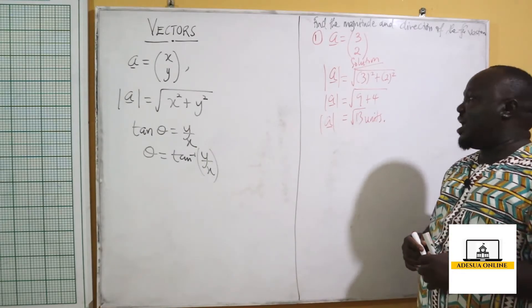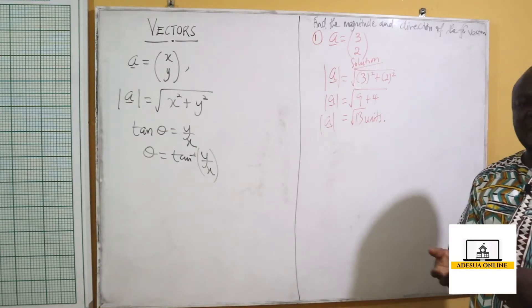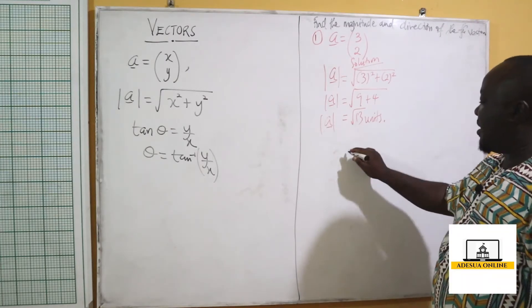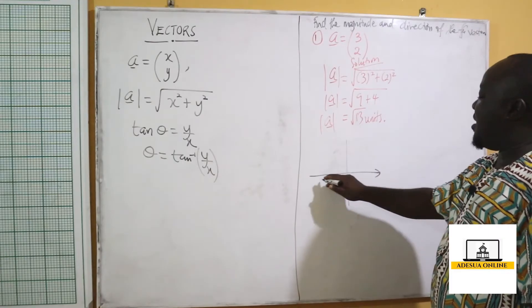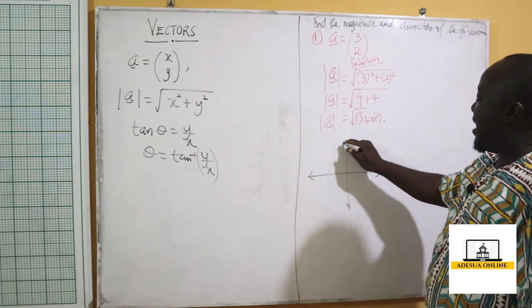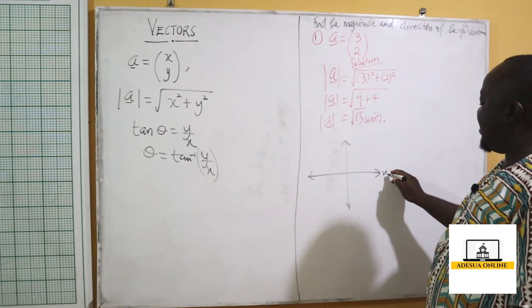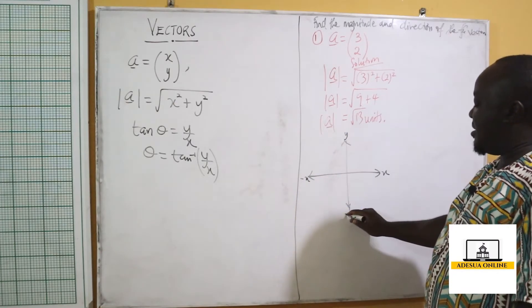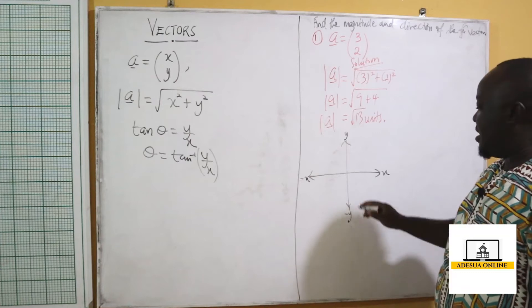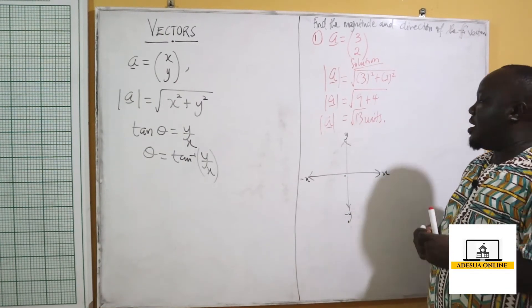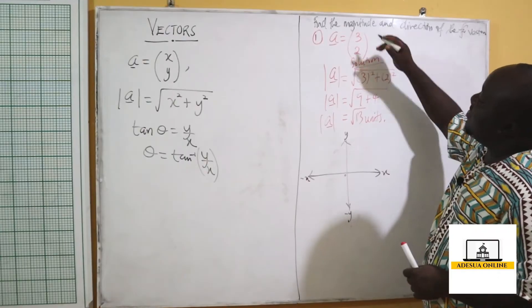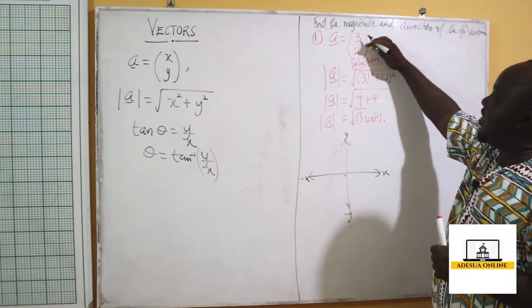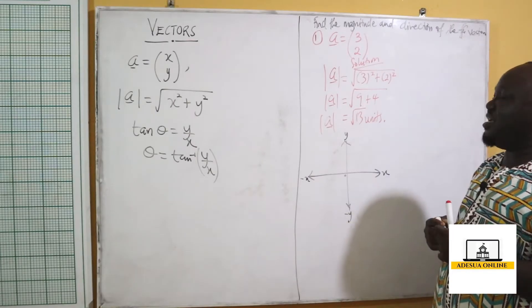So the magnitude of a is equal to square root of 13 units. Now if I want to find my direction, first I need to find the angle. So I go to my Oxy plane. When I draw my Oxy plane, I have my positive x here, my negative x here, my positive y here, and my negative y. This is my origin 0. Now this coordinate stands for x and y — so the 3 is my x and the 2 is my y.